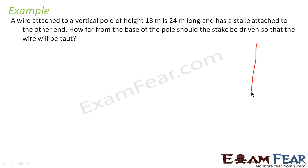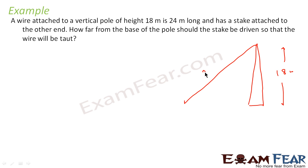There is a vertical electric pole. The height of the pole is 18 meters. A wire is attached from the top of this pole to the ground, and the length of this wire is 24 meters. How far from the base of the pole should this wire be staked so that it is taut? Let this distance be x.